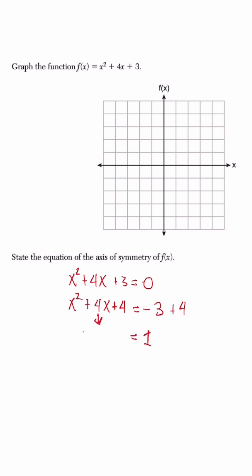We break this trinomial down to its binomial, which would be (x + 2) squared. We're going to set the equation equal to 0 again, so we subtract 1.